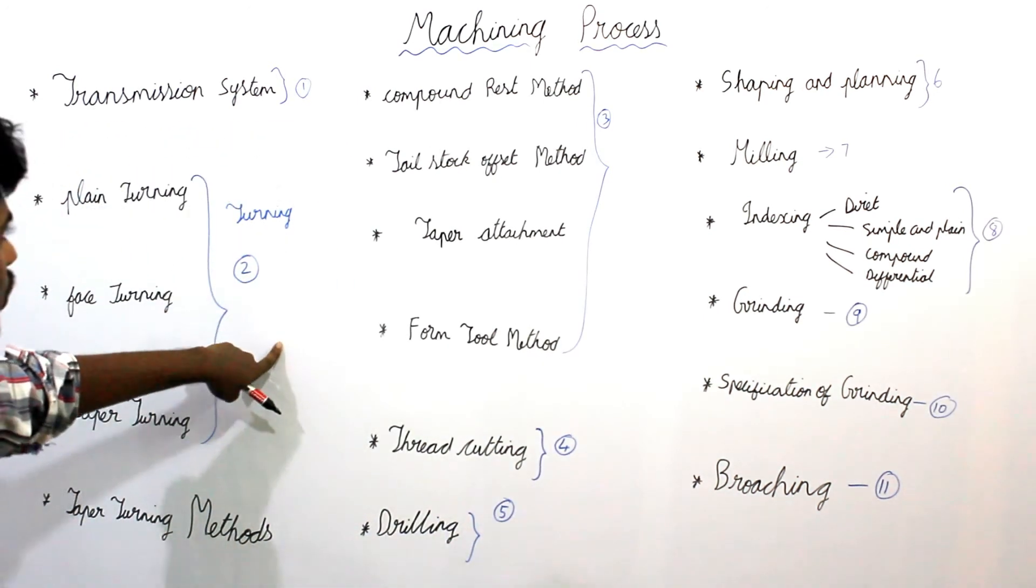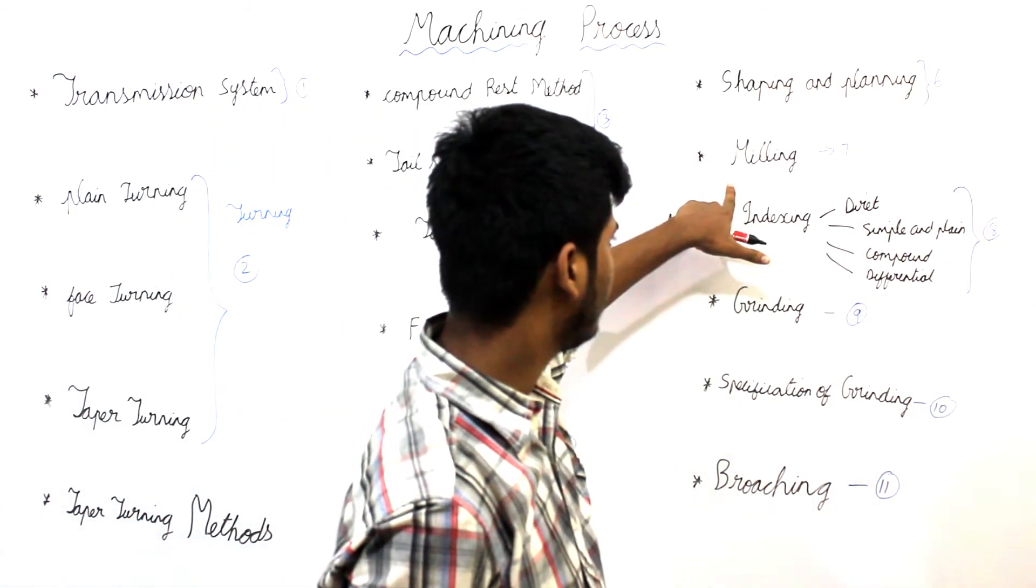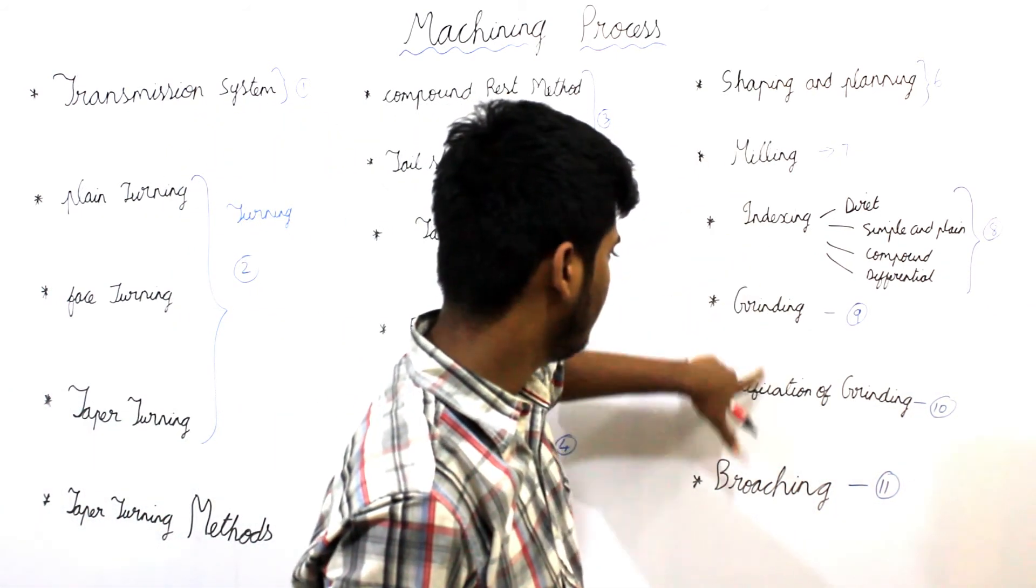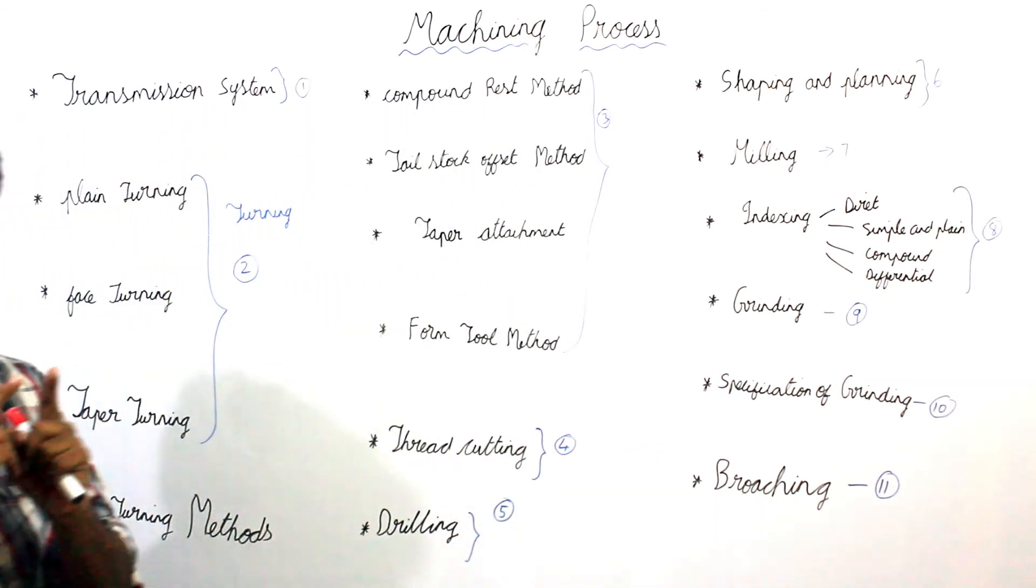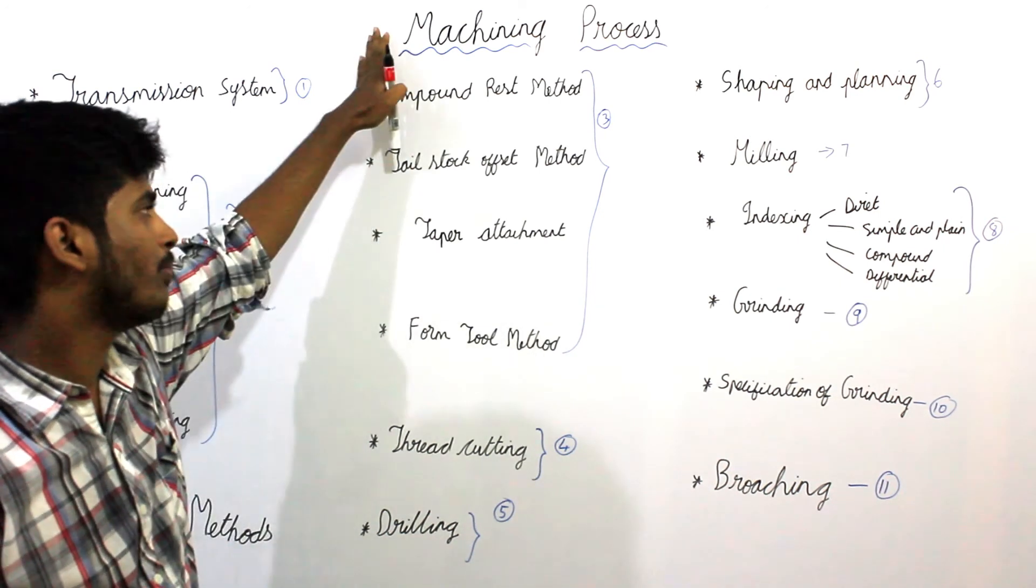One, two, three, four, five, six, seven, eight, nine, ten, eleven. So we have these main important eleven topics under machining process.